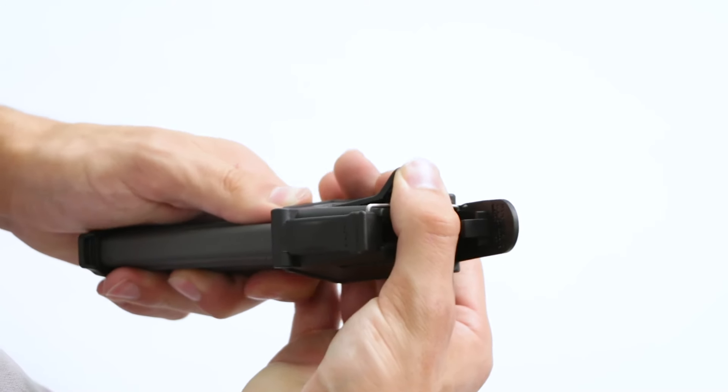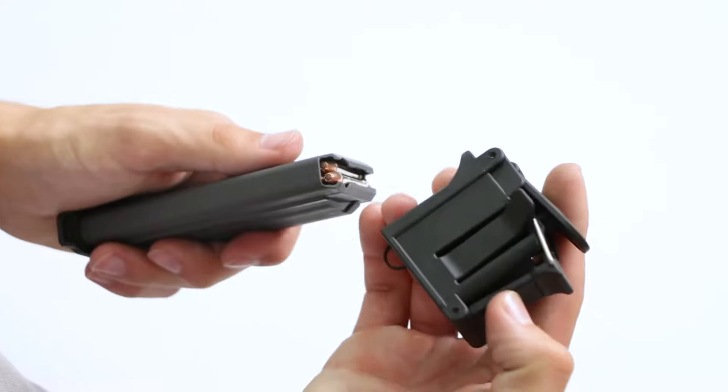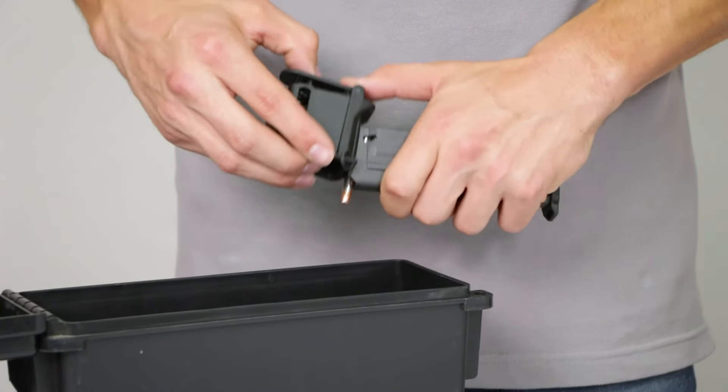To remove, simply lift the lock tongue. Easily unload your magazines by using the rear tooth to slide out the rounds.